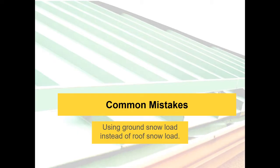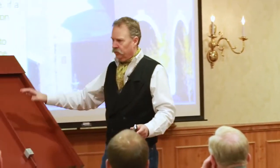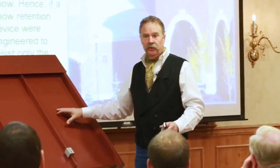Common mistakes. Ground snow is not the same as roof snow, and one of the big mistakes frequently made is assuming that whatever the ground snow is, that's what the roof snow is.